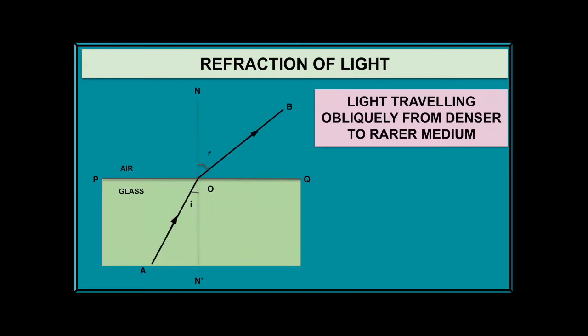When drawing these diagrams, it is very important to mark the arrow marks on the light rays. In the second case, the light ray travels from a dense medium to a rare medium; the angle of refraction is bigger than the angle of incidence because the refracted ray bends away from the normal.